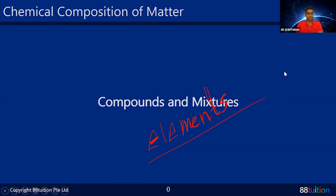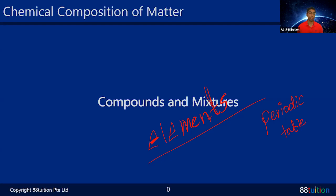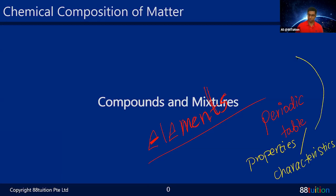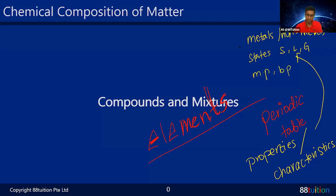We did elements and we talked about the periodic table. We had a simple exercise on how to find elements on the periodic table based on their properties — also called characteristics — which include whether they are metals or non-metals, and their states of solid, liquid, or gas, and what their melting point and boiling point are.